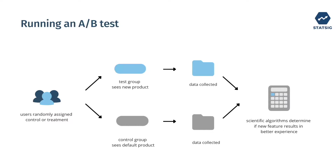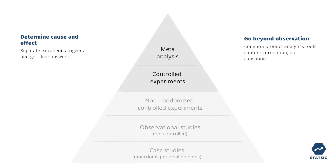A-B tests help us separate extraneous triggers that pollute the metrics that we typically observe on a dashboard. Common product analytics tools enable observational studies — say by segmenting users and finding the triggers that lead to a specific segment of users having higher engagement in an app. These studies generally capture correlation but not causation, and when we look at the pyramid of experimentation, that's going to be in the lower half of the pyramid in that lighter gray area.